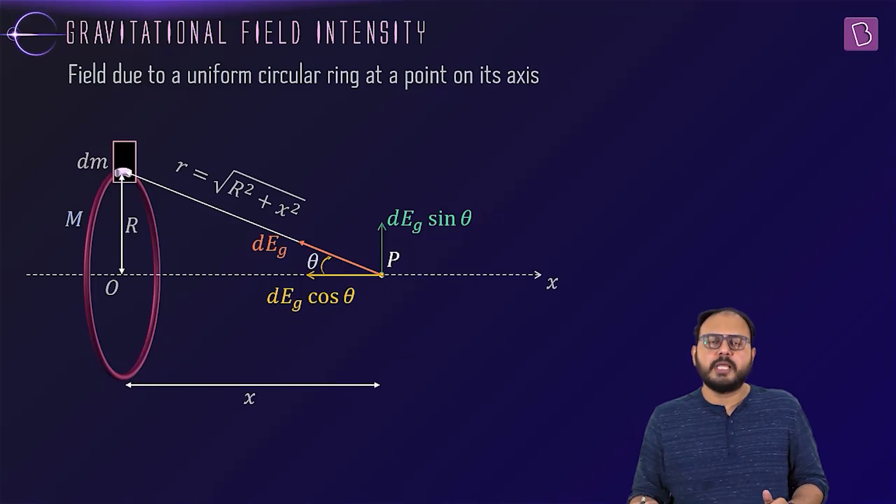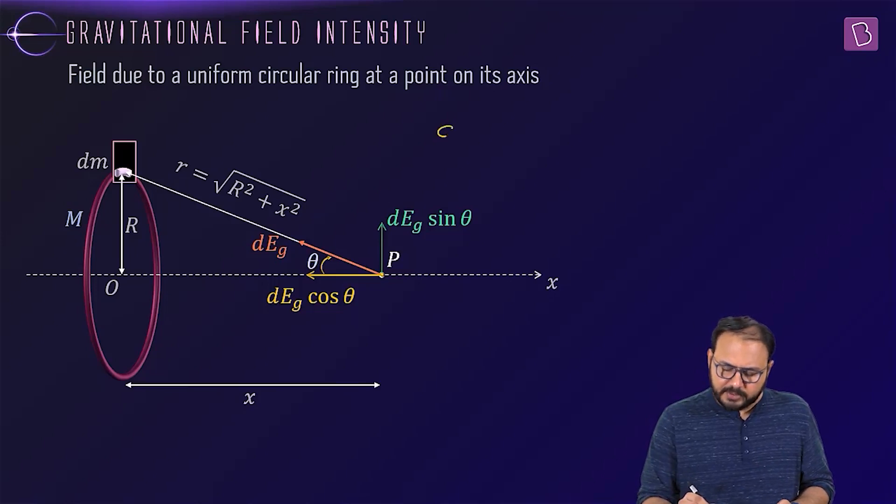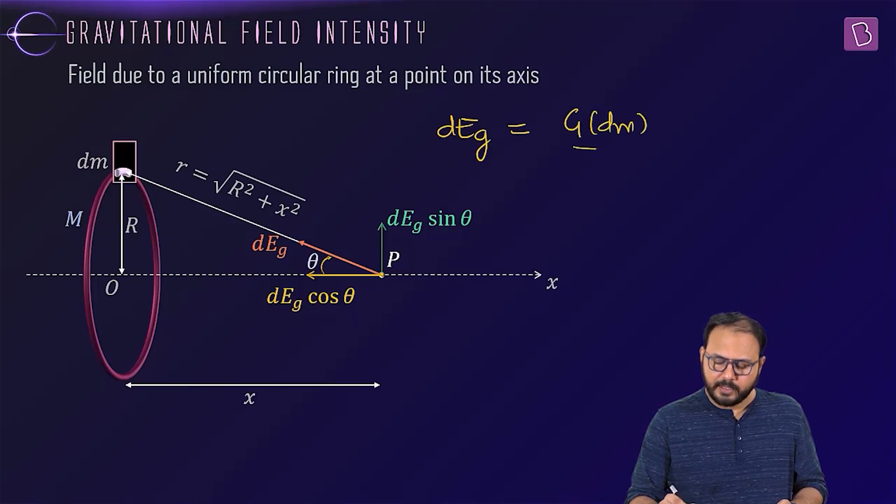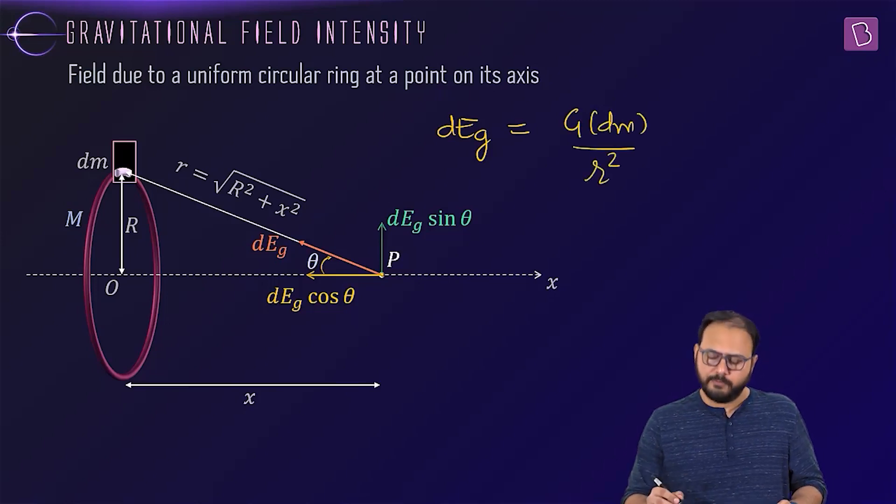Absorb that information. Then only I go ahead. Do you agree that d sin theta is a useless component? Because of what? Symmetry of the ring. Okay, sir. Now dEg for your reference. dEg is g. Again, sir, minus sign. Don't do that. Don't be that person. gdm by r square, sir. Very good.